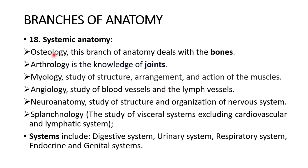The systemic anatomy: osteology deals with the bones. Arthrology is the knowledge of joints. Myology is the study of the structure, arrangement and action of muscles. Angiology is the study of blood vessels and lymph vessels. Neuroanatomy is the study of the structure and organization of the nervous system. Splanchnology is the study of the visceral systems except the cardiovascular and lymphatic systems. Systems include the digestive system, urinary system, respiratory system, endocrine system, and genital system.